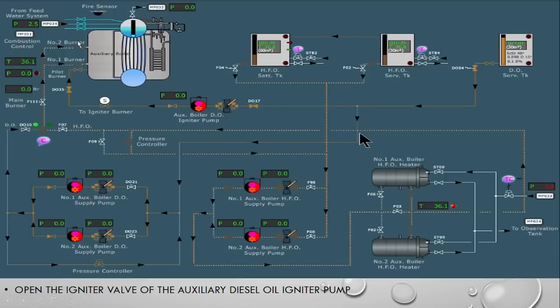In this boiler shown here, it consists of one pilot burner and two main burners. But normally on ships you will find one main burner and one pilot burner, so I will explain with only one burner burning at a time for easy understanding.